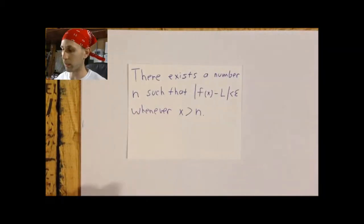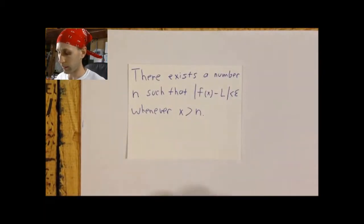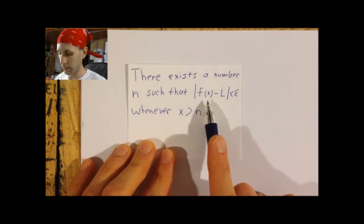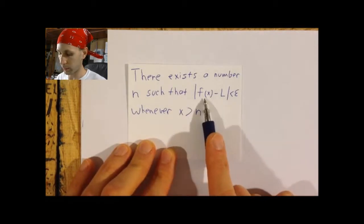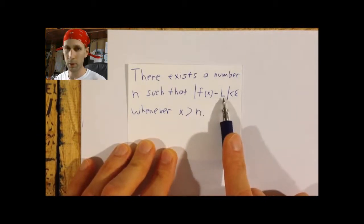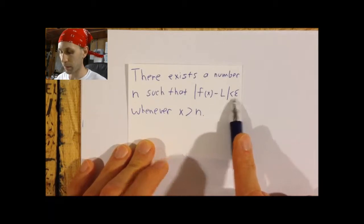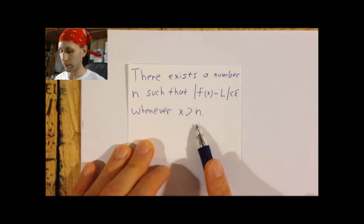That's going to require us to modify our definition a little bit. What it means for a function to approach a number L is this: there exists a number N such that the absolute value — meaning the distance from f(x) to L, which is the supposed limit — is less than epsilon whenever x is greater than N.